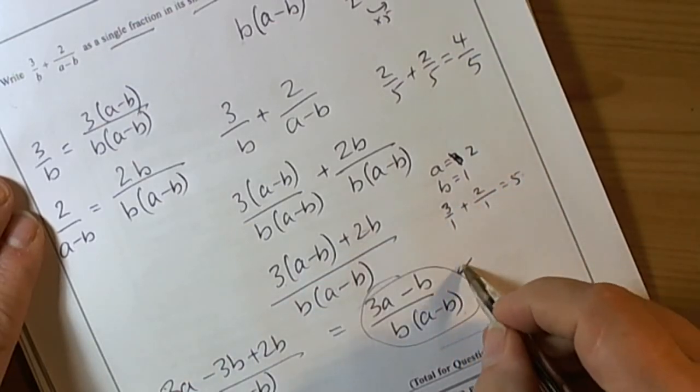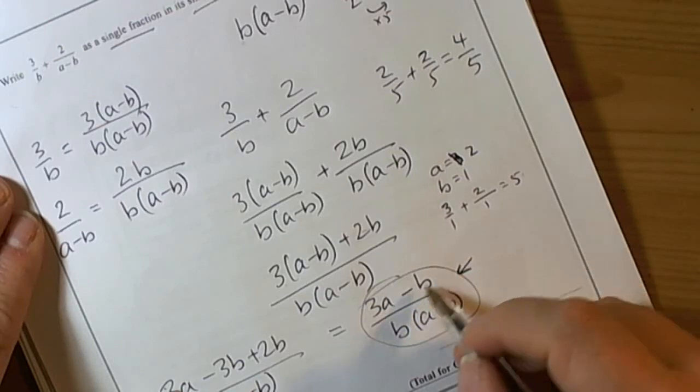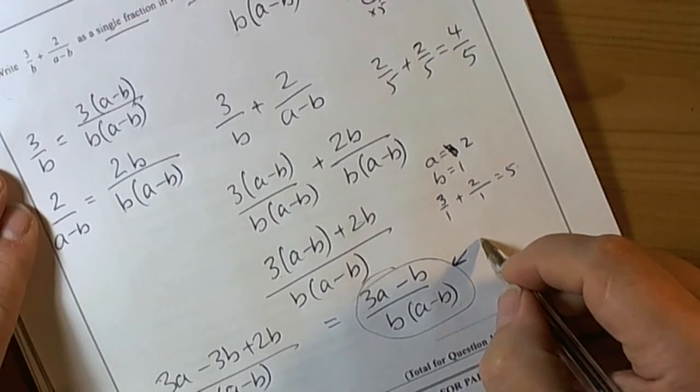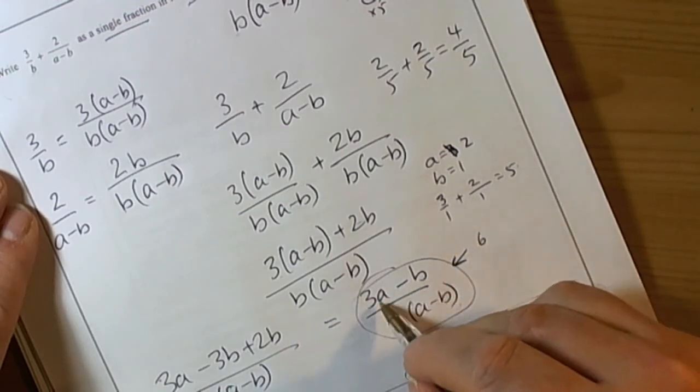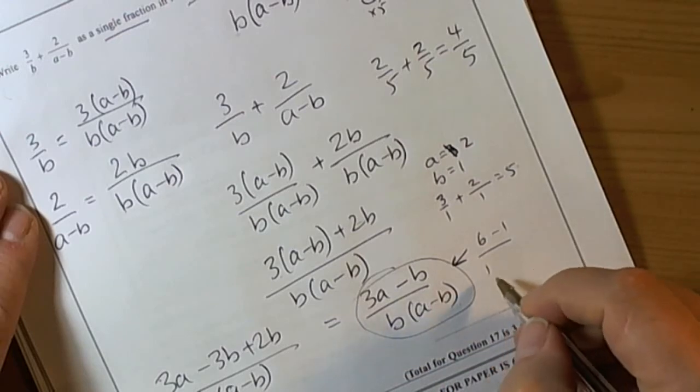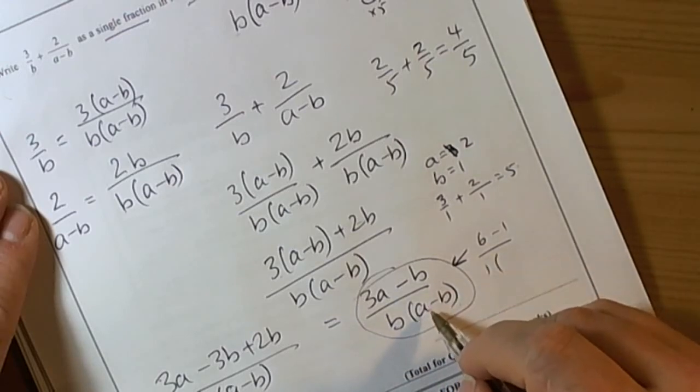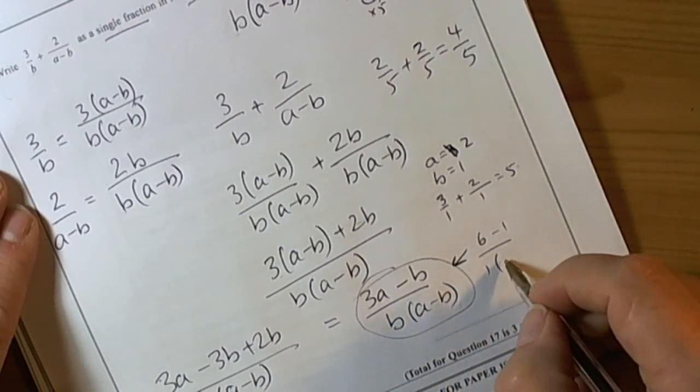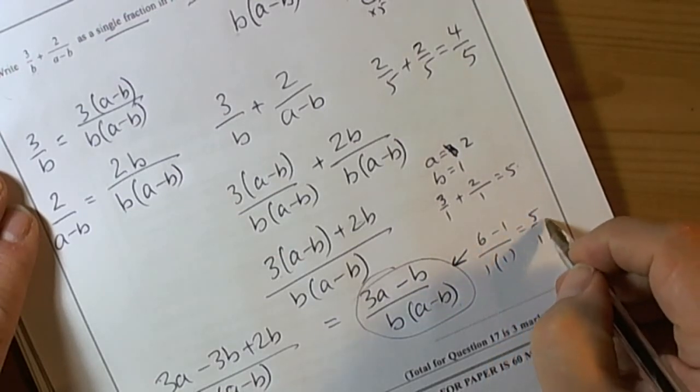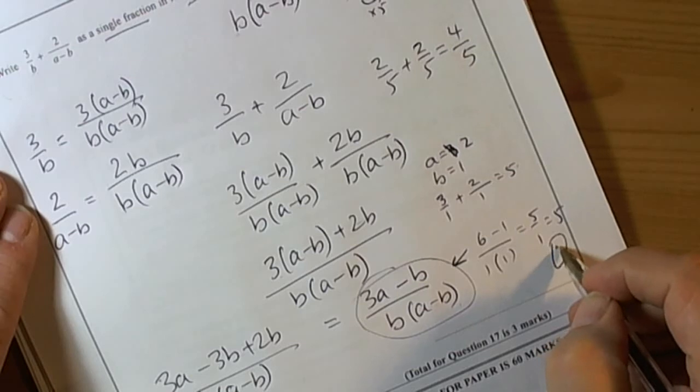If we now put those values into what we think is our final answer, it should give us the same answer of 5. It's telling us to do 3 times the a value, so 3 times 2 is 6. Take away the b value which is 1, over b which was 1, times (a-1) which is 1. So we've got 6 take away 1 is 5, 5 over 1 is 5. So we're happy, the check worked. We're quite confident in the final answer.